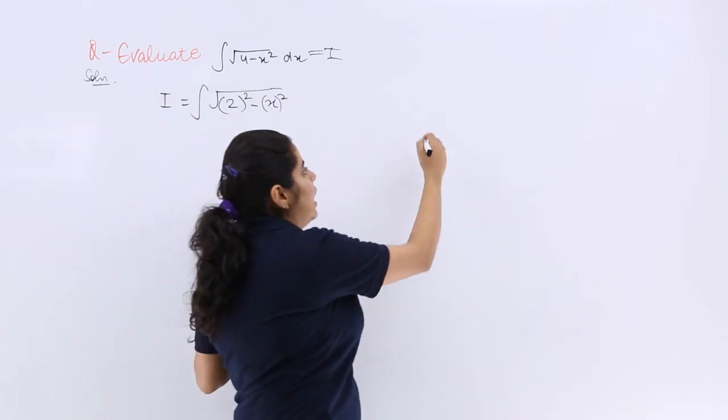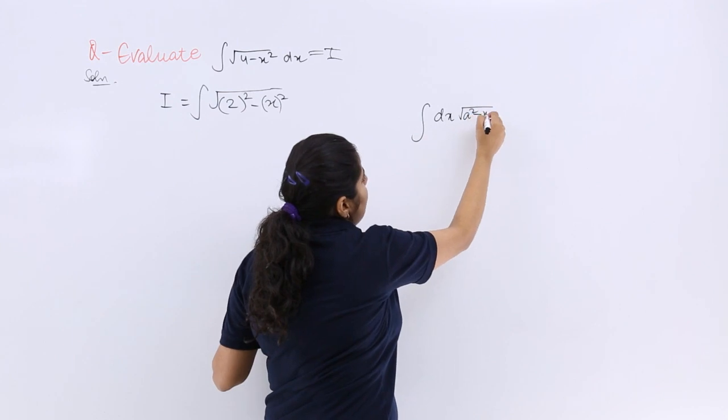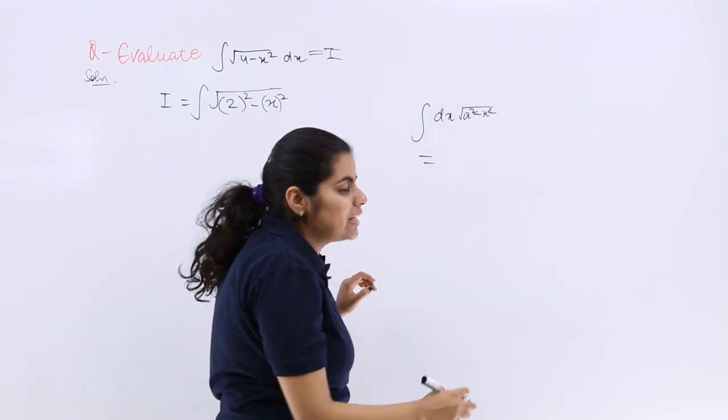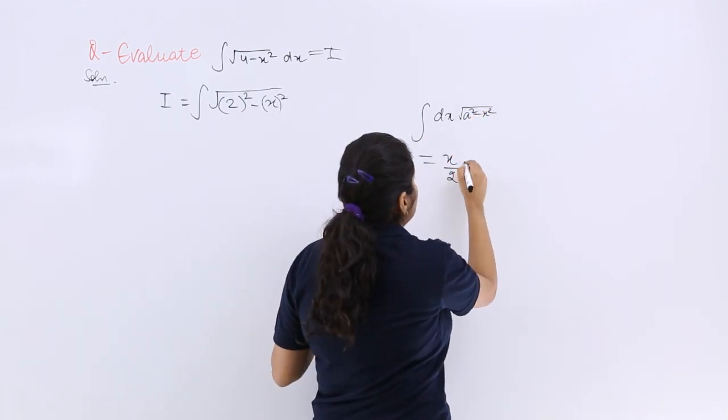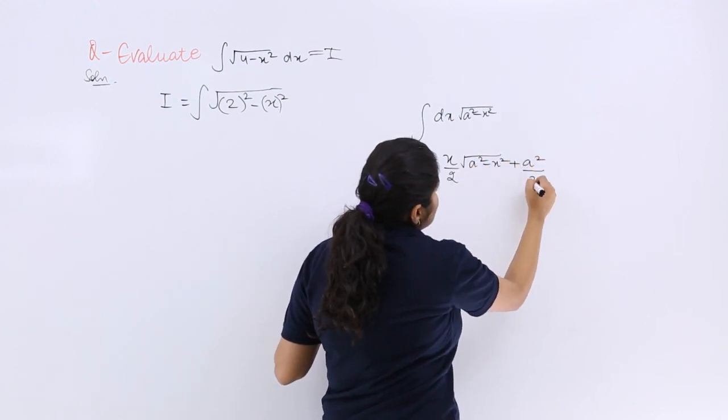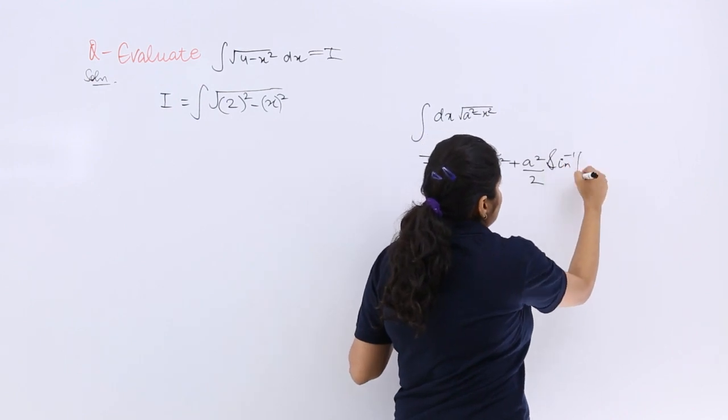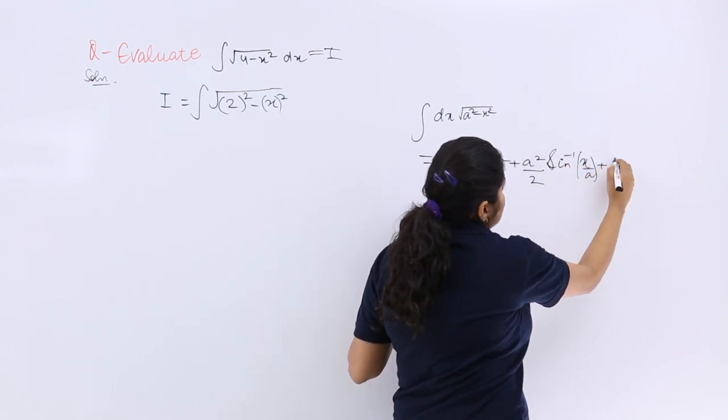I need to use the formula of dx multiplied by under root a square minus x square, which is equal to x by 2 under root a square minus x square plus a square by 2 sine inverse x by a plus c.